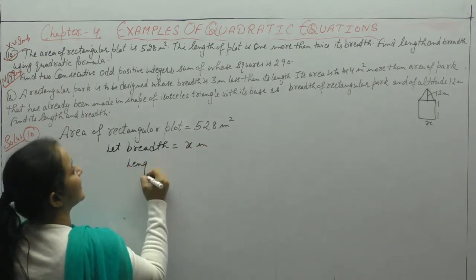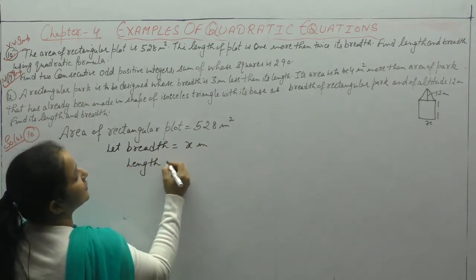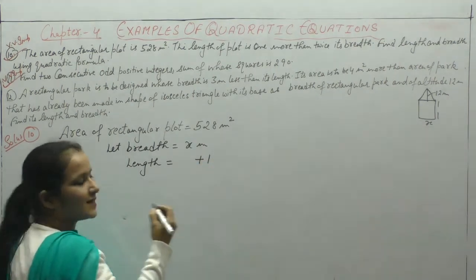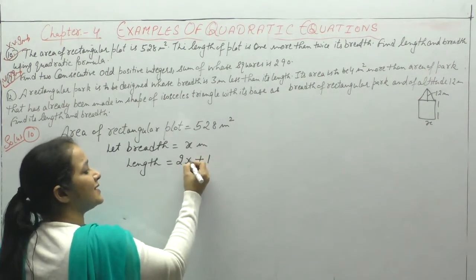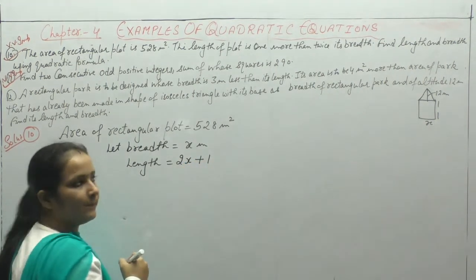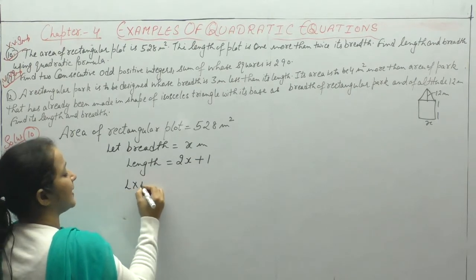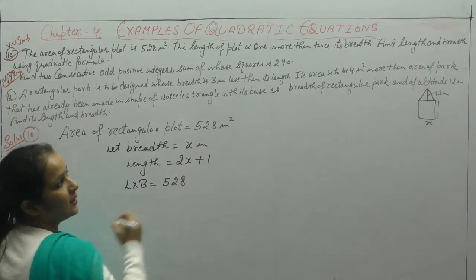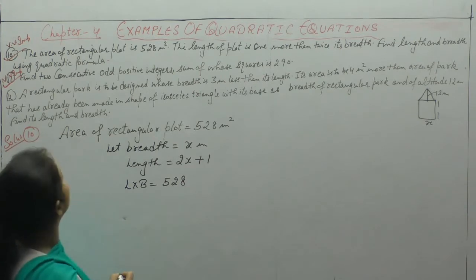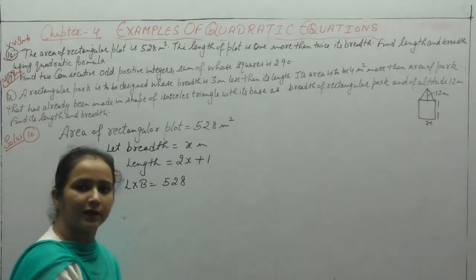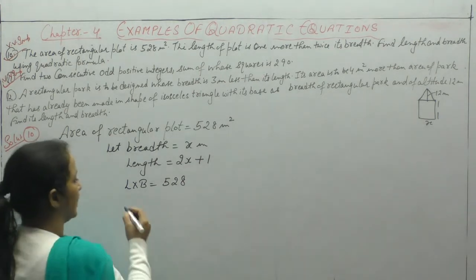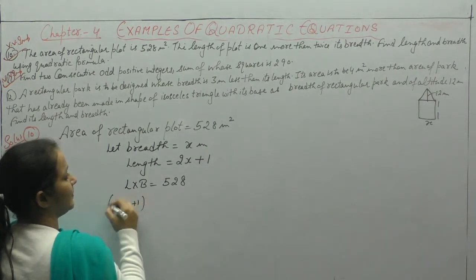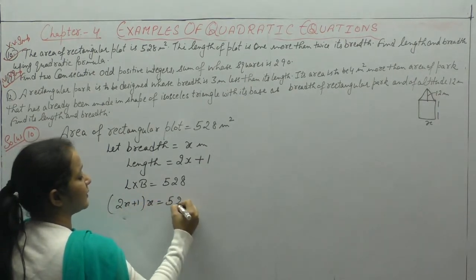Now, what is the length? Length of the plot is 1 meter more, so plus 1, then twice its breadth. Area of rectangle is length into breadth. Find the length and breadth using the quadratic formula. Length is 2x plus 1, breadth is x, and area is 528.